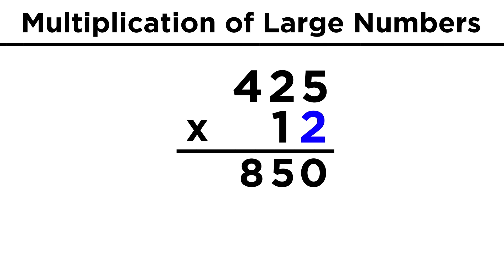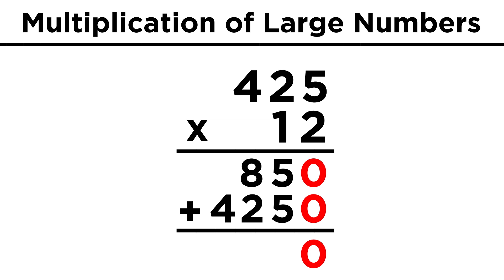Now we are done with the two in twelve, so let's do the one. Remember, we place a zero in the units place here, since we are multiplying through the tens place. Five times one is five, two times one is two, and four times one is four. Now we just add these together. A zero here, five and five is ten, so put a zero and carry the one. Eight and two plus the one is eleven, so put a one and carry the one, and four plus one is five. Five thousand one hundred is our answer.